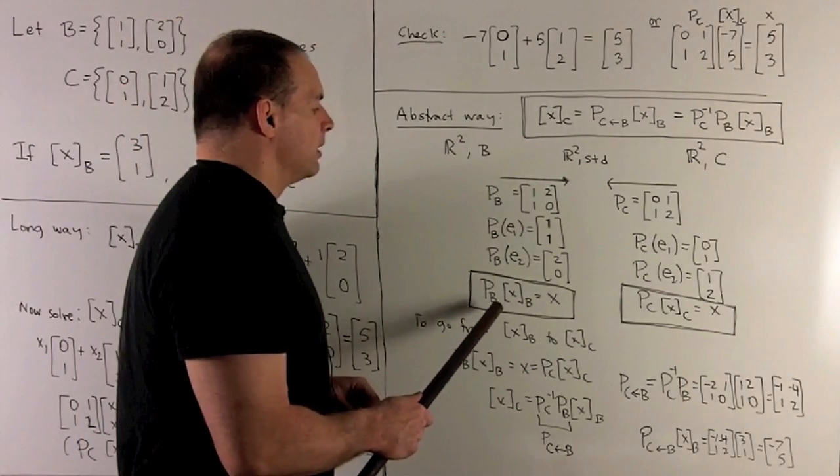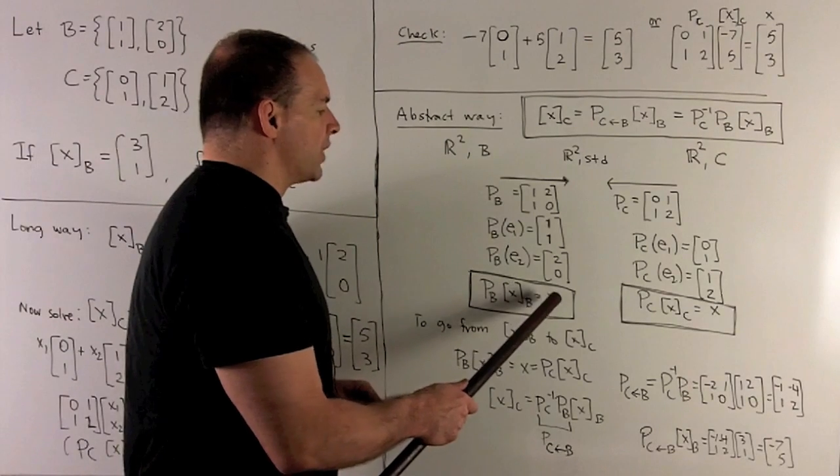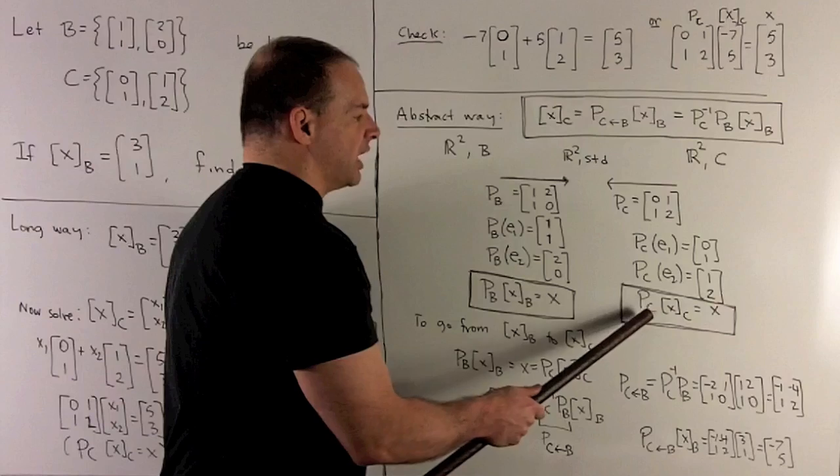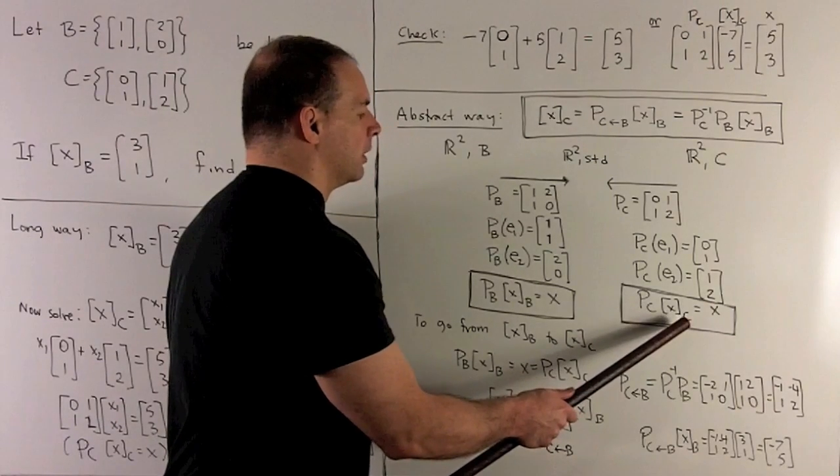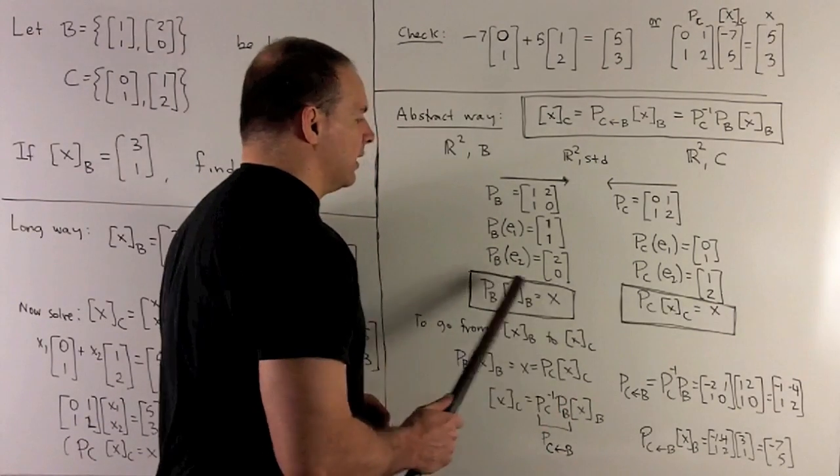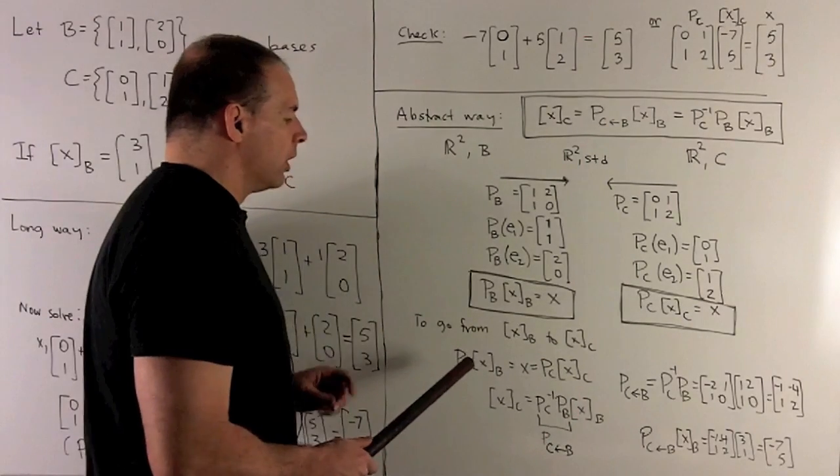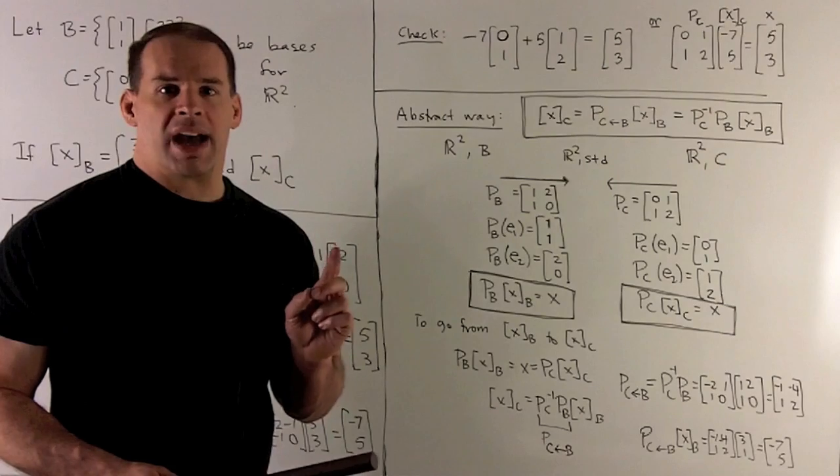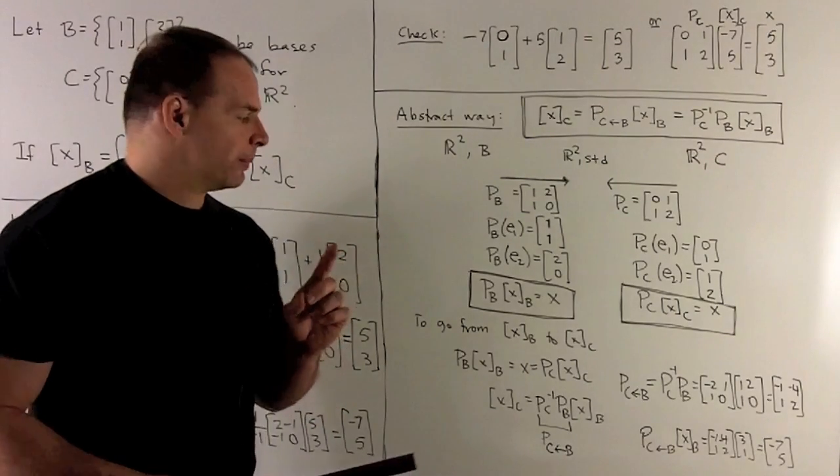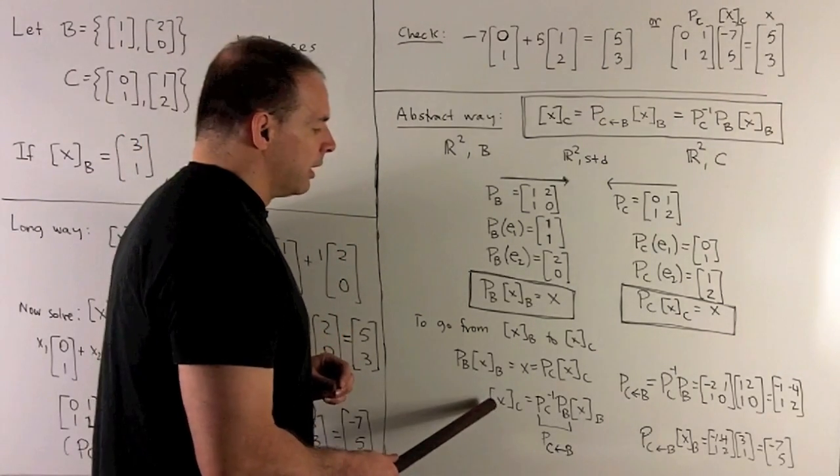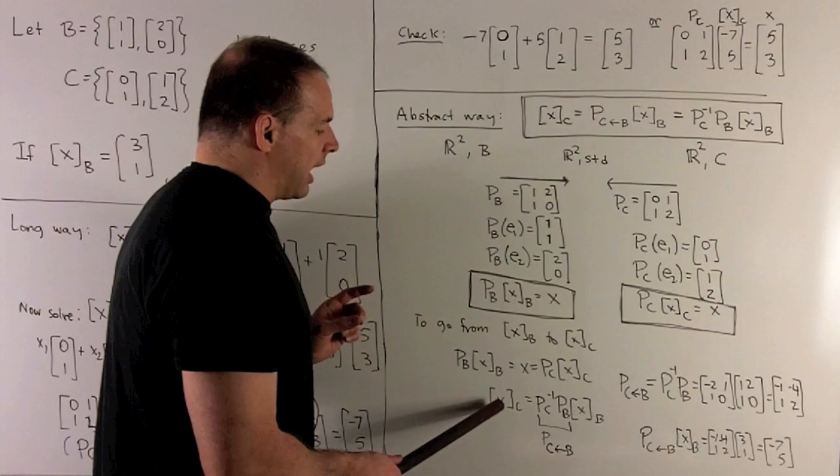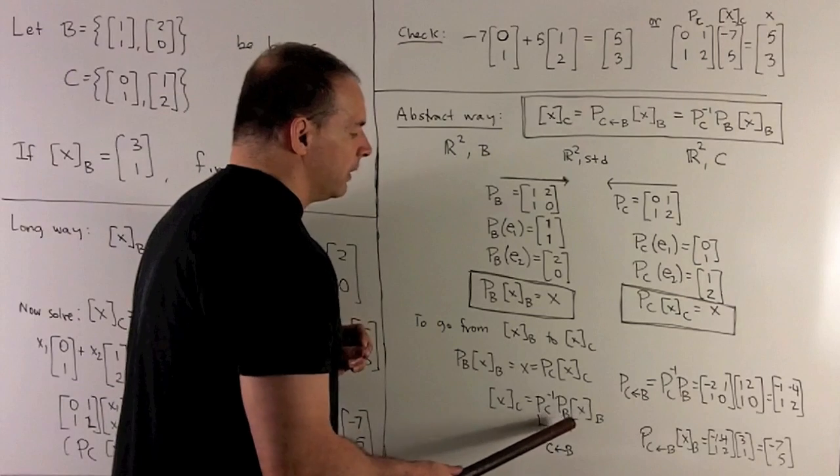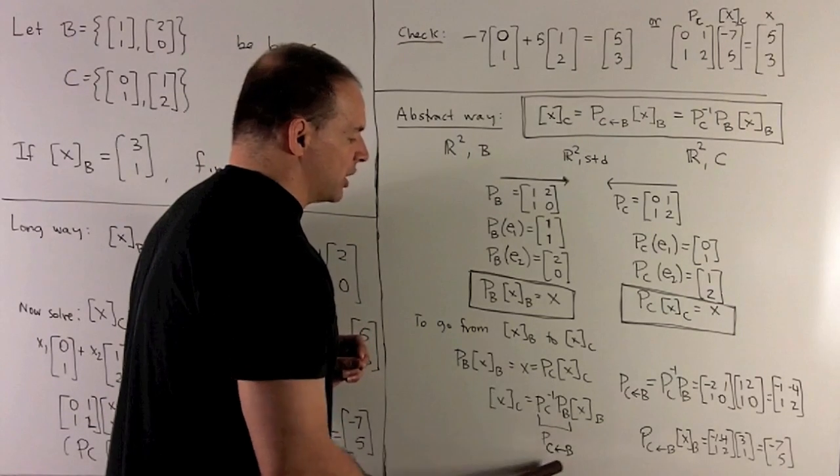Basis matrix of B times coordinate vector for B equals X. But, X is also equal to basis matrix for C times coordinate vector for C. So, we'll get rid of the X and set these two terms equal to each other. And then, what I want to do is isolate C. So, I'm going to multiply both sides by P_C inverse. Now, that's going to mean I can get the coordinate vector for C directly off of the coordinate vector for B if I multiply by this matrix here.